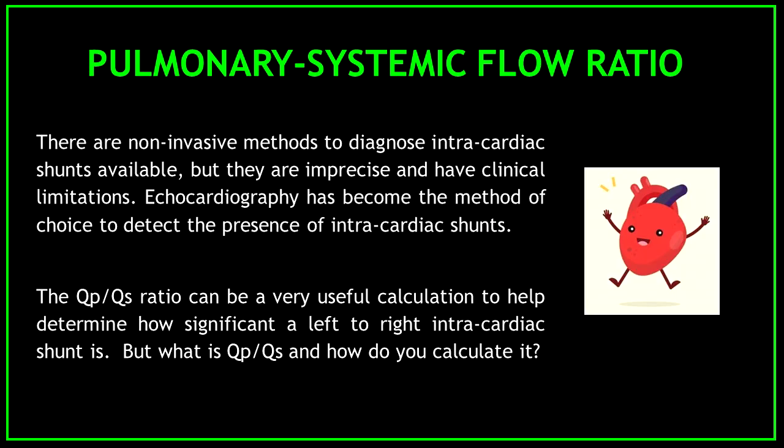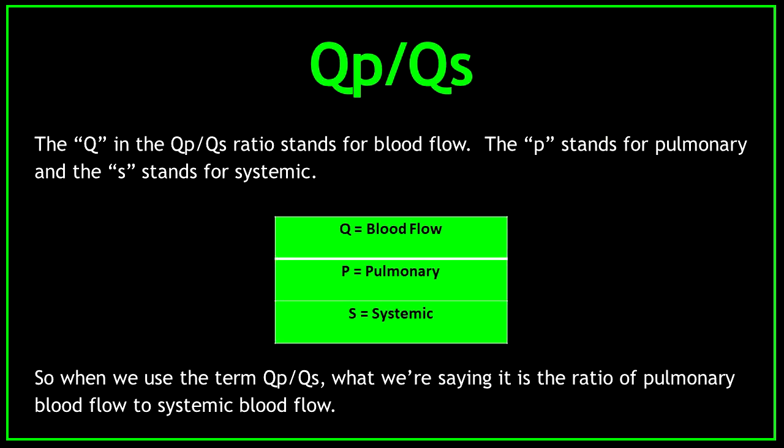There are non-invasive methods to diagnose intracardiac shunts available, but they are imprecise and have clinical limitations. Echocardiography has become the method of choice to detect the presence of intracardiac shunts. The QPQS ratio can be a very useful calculation to help determine how significant a left-to-right intracardiac shunt is. The Q in the QPQS ratio stands for blood flow, the P stands for pulmonary, and the S stands for systemic.